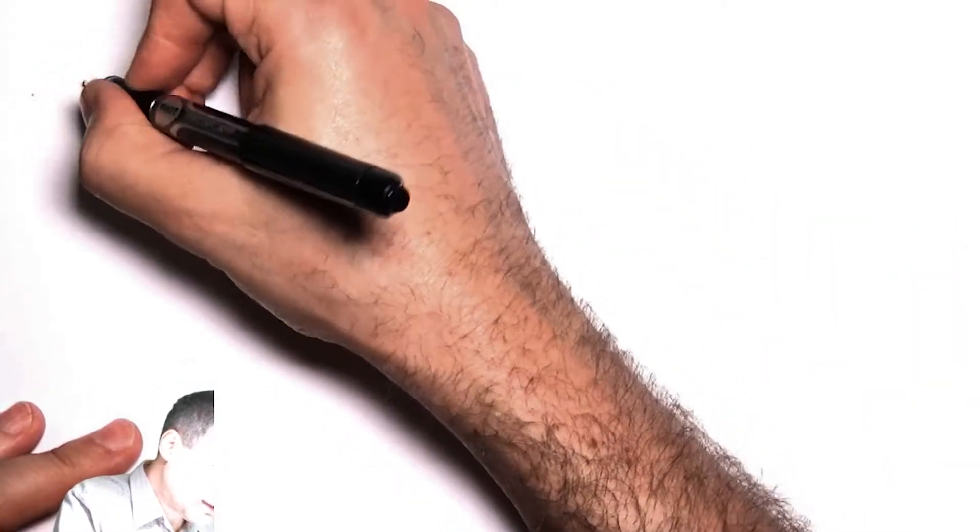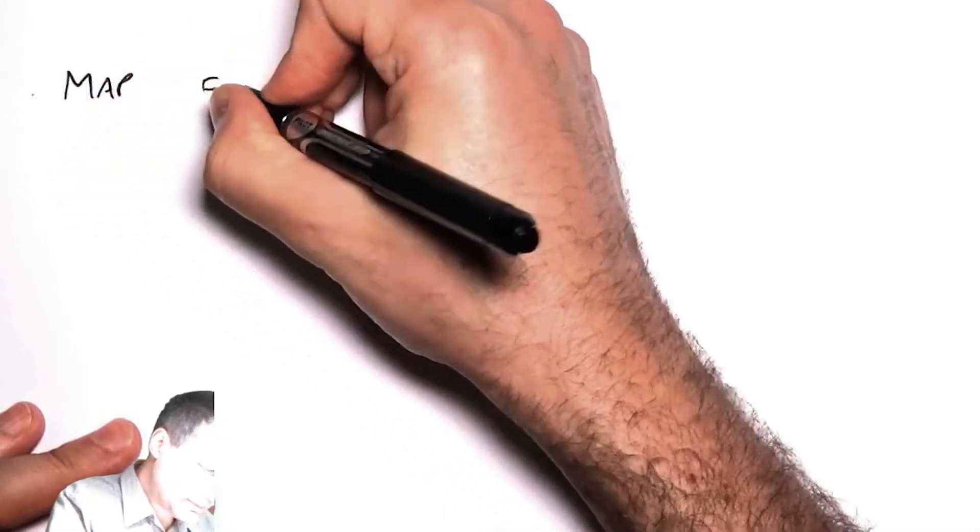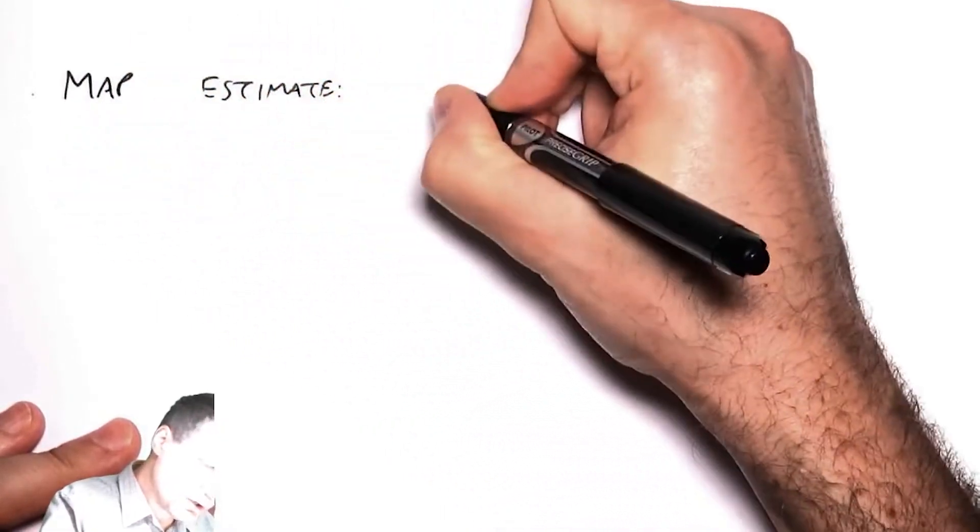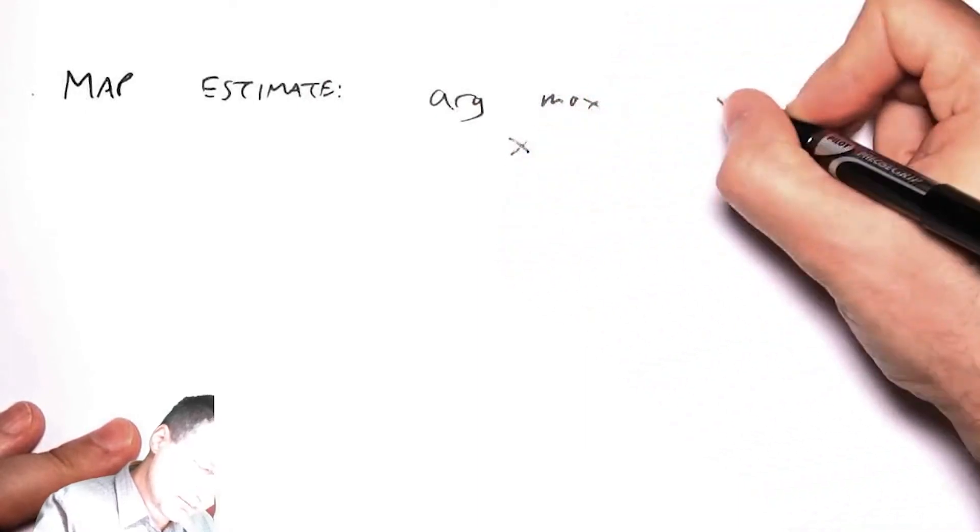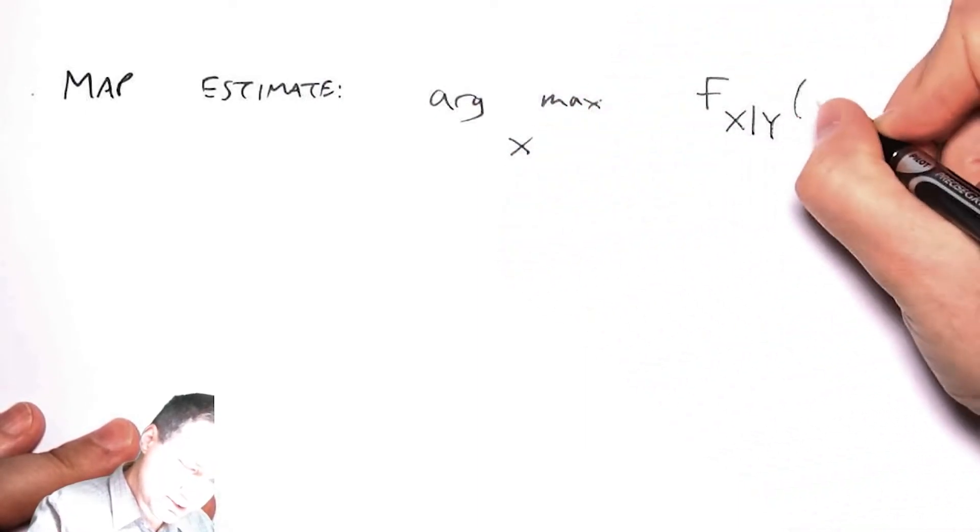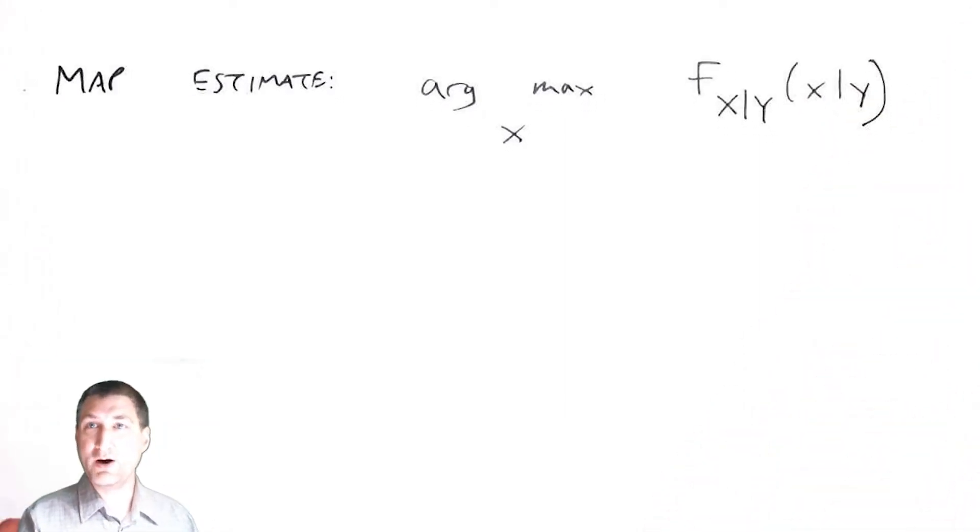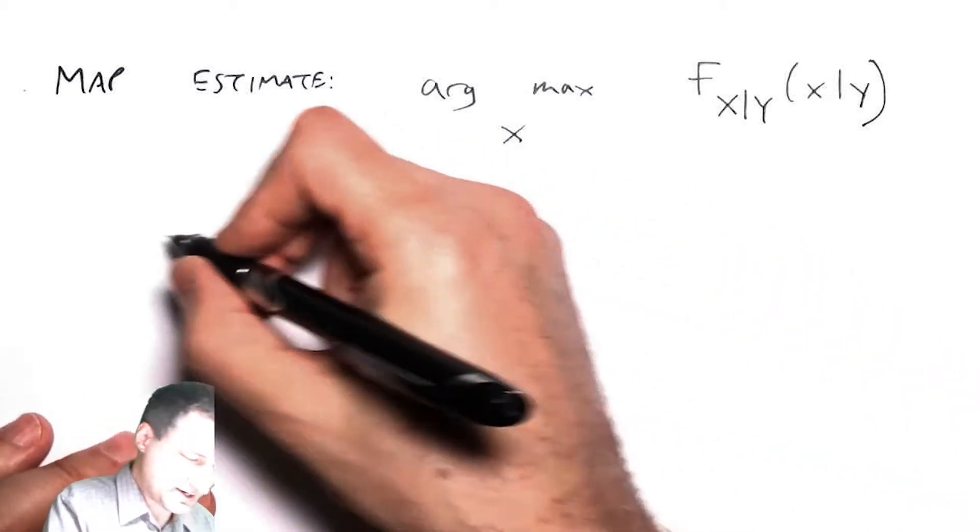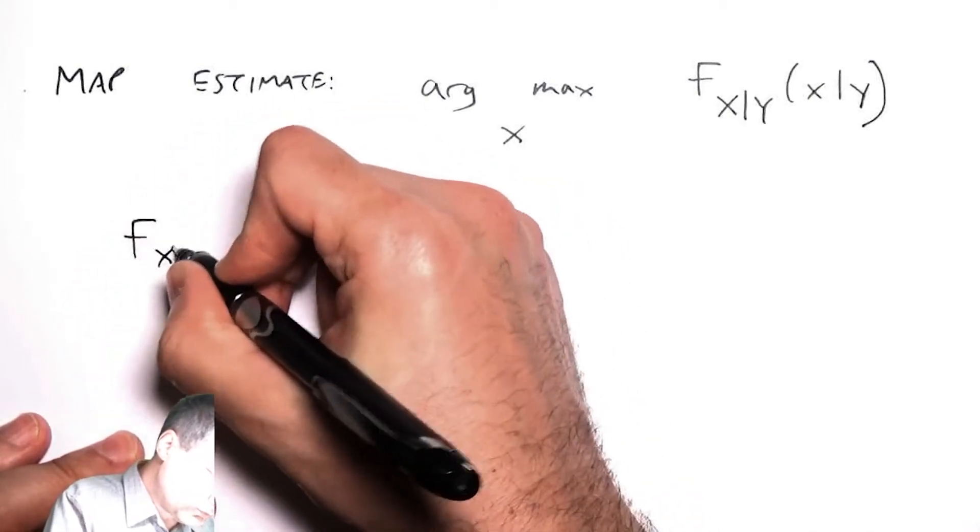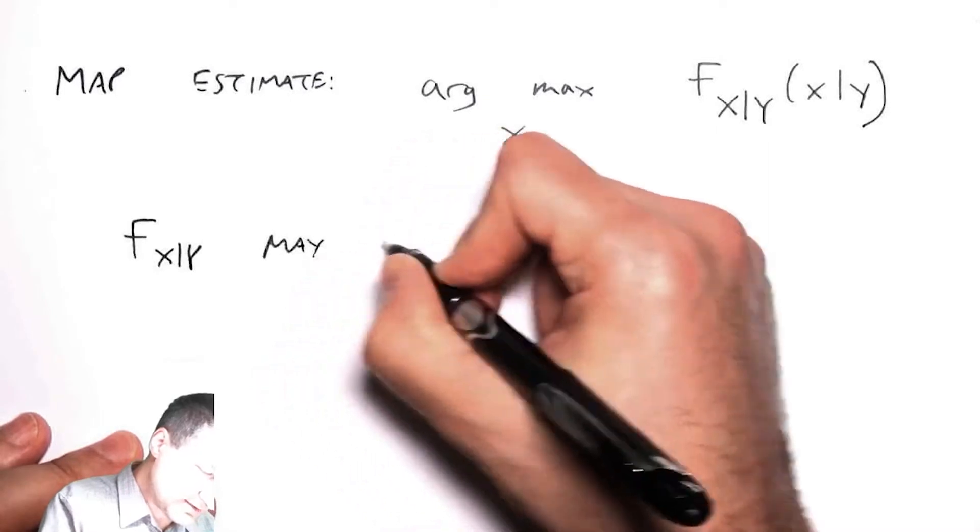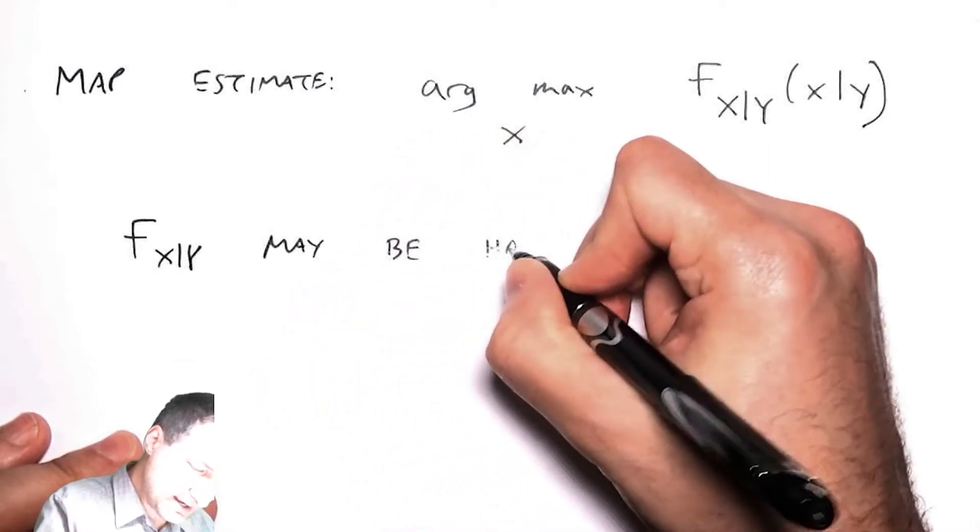Last time we talked about estimating the value of x given an observed value of y, and we talked about the maximum a posteriori or MAP estimate. Remember that the MAP estimate was the value of x that maximized the conditional probability x given y. That's really in theory what we want, right? Given the full joint distribution of x and y, what is the best x I could choose?